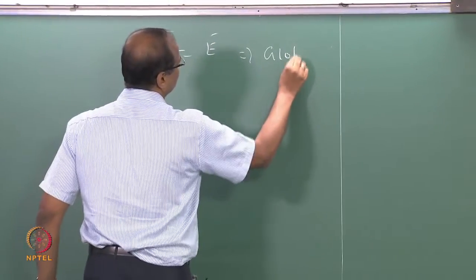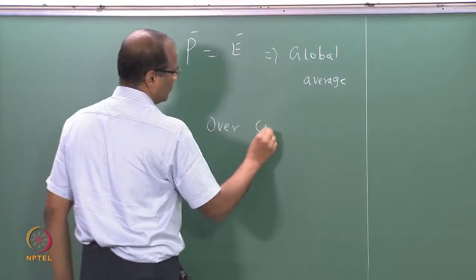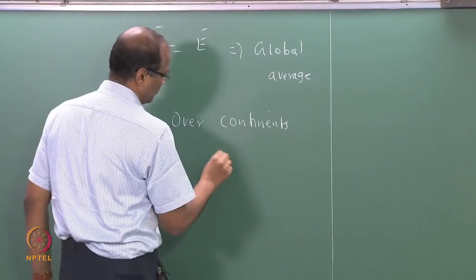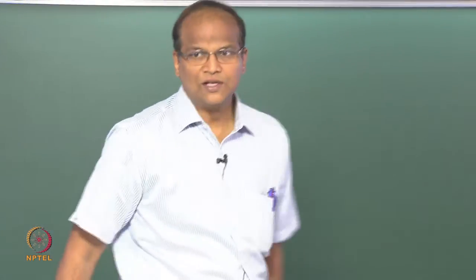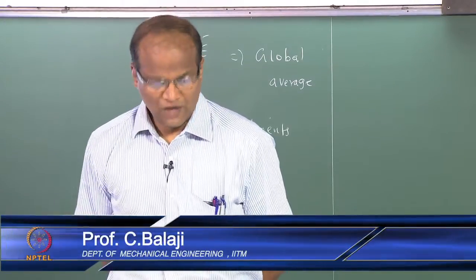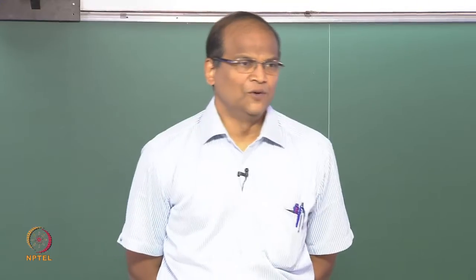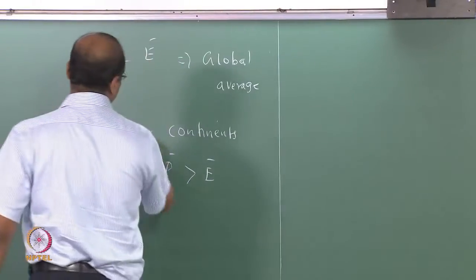This is global average. Over continents, the precipitation is greater than the evaporation. There is positive P minus E, which is very good. But there can be places like deserts where E is much greater than P. The evaporation is more than the precipitation and this water vapor will move towards the intertropical convergence zone, that is towards the equator, or it will go towards the middle latitudes. Germany, UK, Brazil and all that. This is very important, over continents P is greater than E.